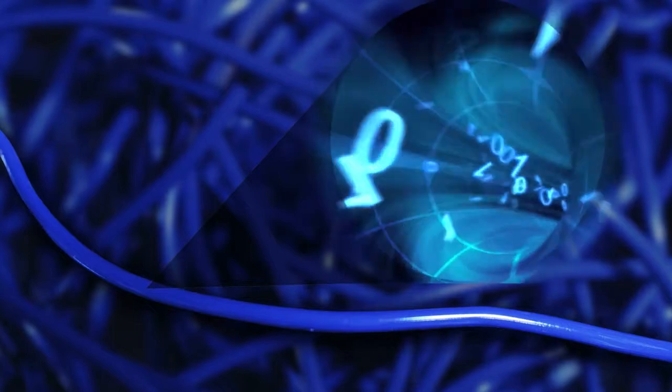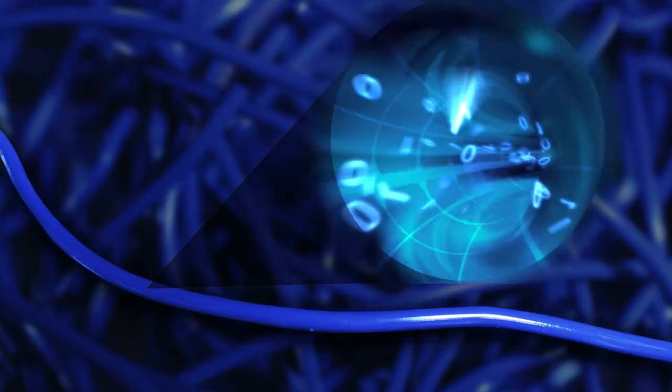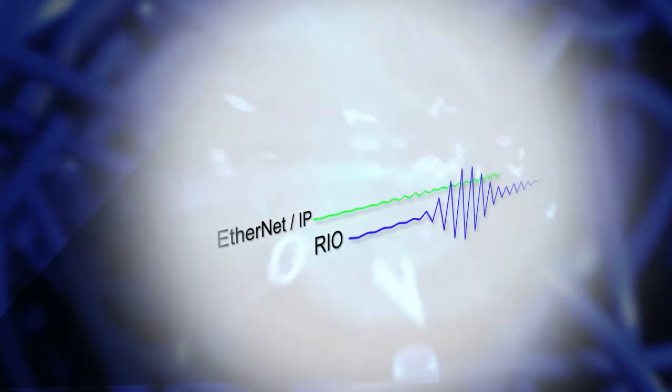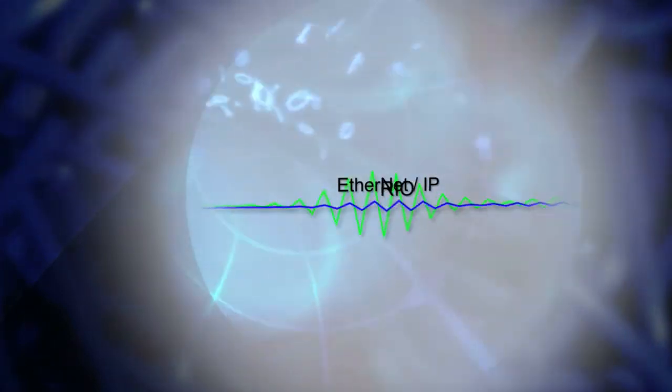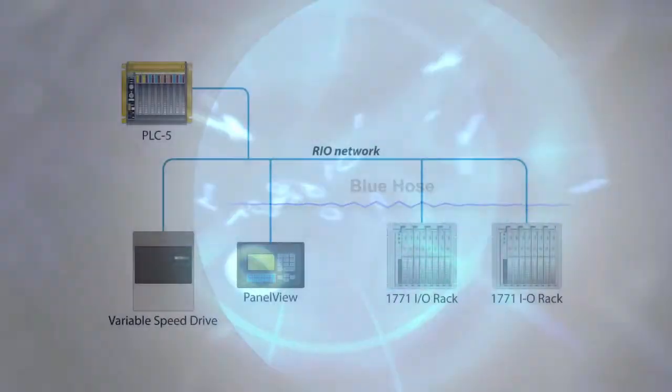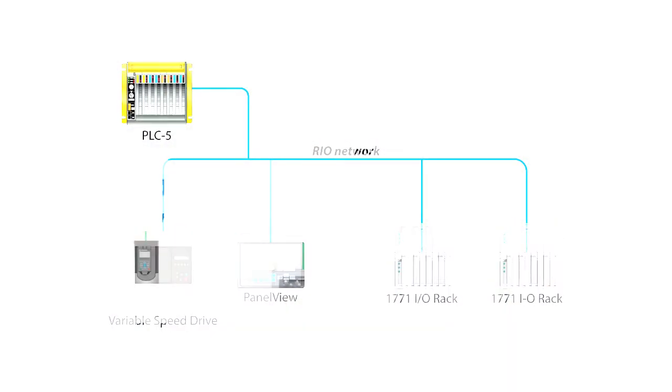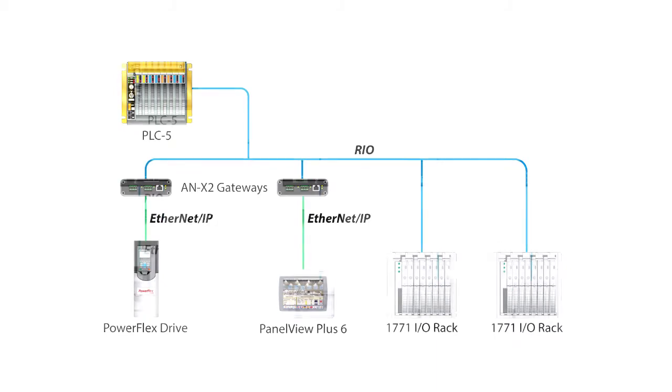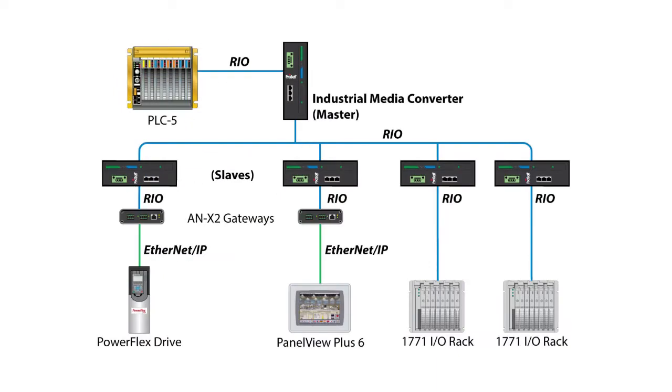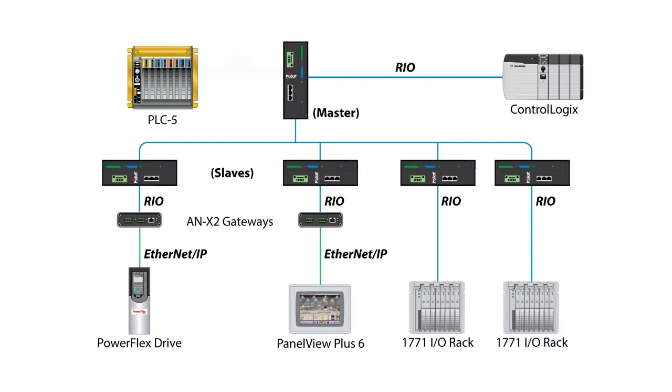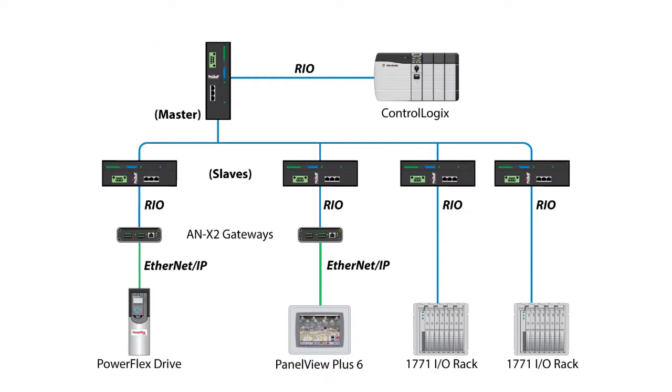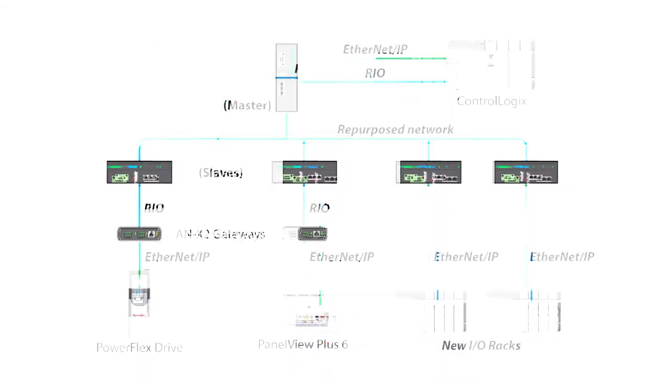Now you can transmit and receive Ethernet IP and remote I.O. data over your existing Belden Bluehose cable. A logic system can be deployed on top of the existing remote I.O. infrastructure, allowing users to upgrade their legacy I/O, drives, HMIs, and other end devices in a phased manner.